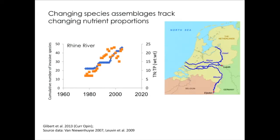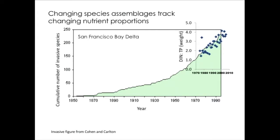What's the relationship with food webs? If we look at the Rhine River example, the blue line shows cumulative invasive species and the orange points show N:P — they appear to be walking in lockstep. Is there a cause and effect? We'll try to tease that apart. There are also changing food webs in San Francisco. We have a long record of invasive species, and with the record of N:P that we have, the cumulative number of invasive species seems to track this change in N:P.